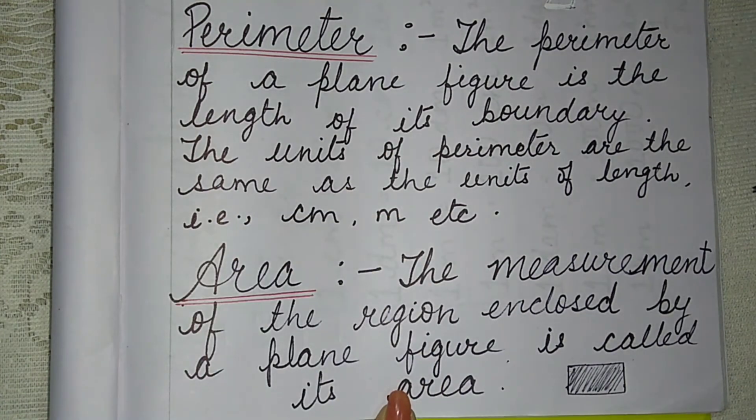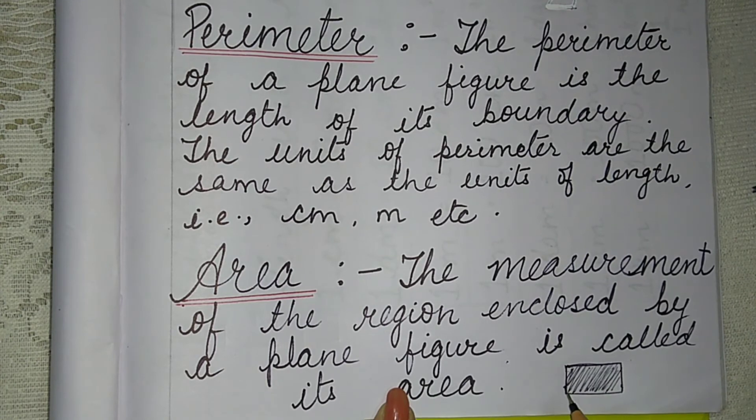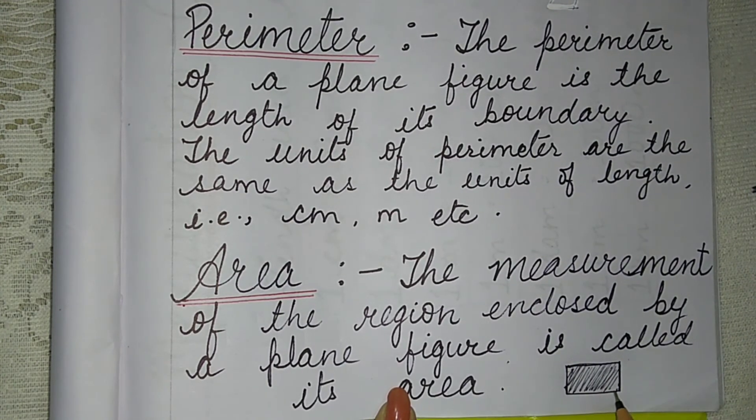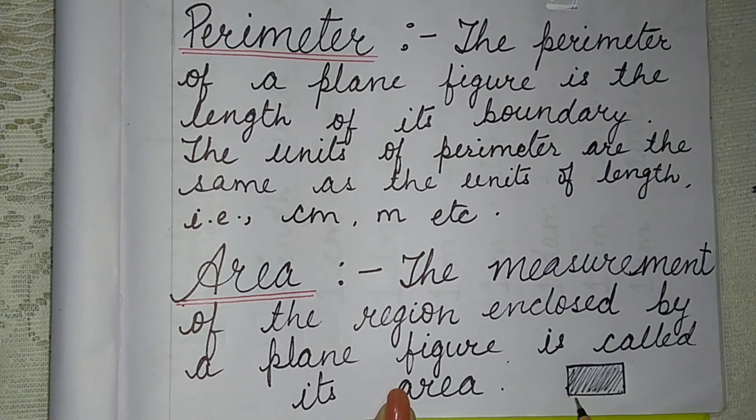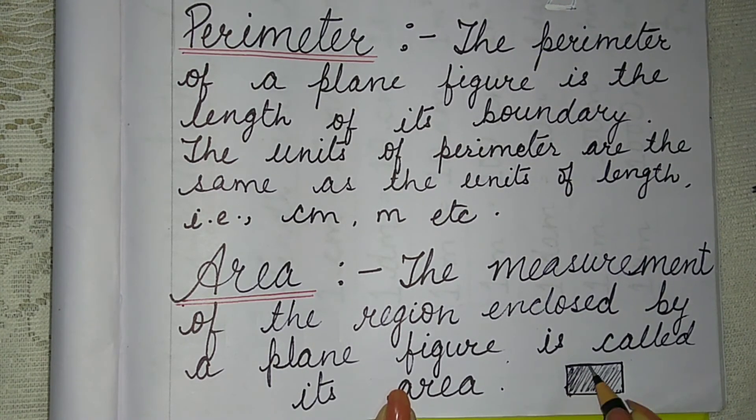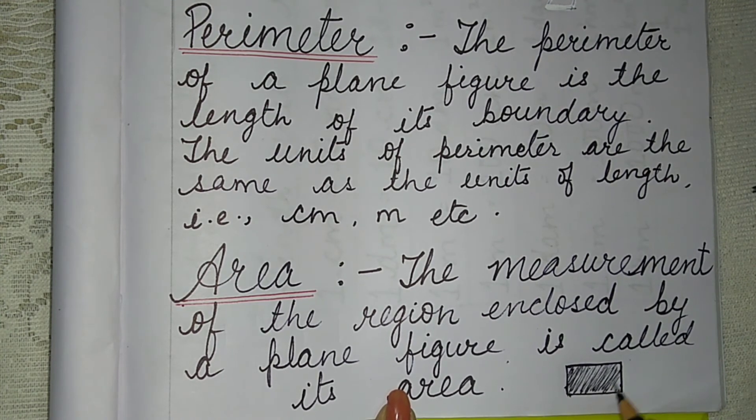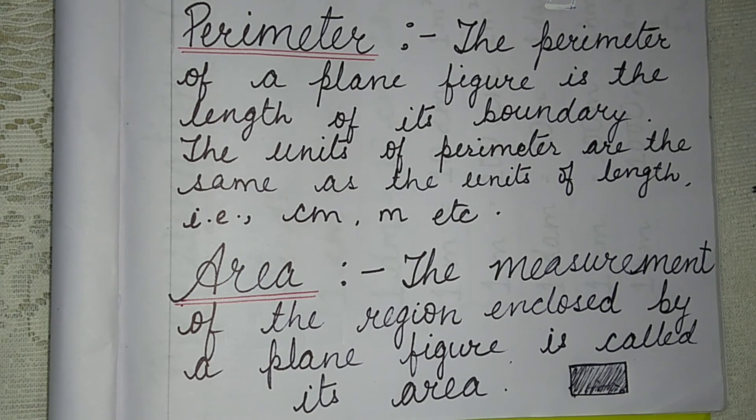But when you ask the perimeter, the outside boundary wall is called the perimeter. We call this outer part the perimeter. And when we call this rectangle, the inner part we call the area. I hope it's clear. Your perimeter and area are clear.